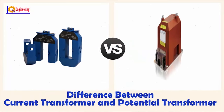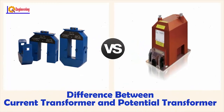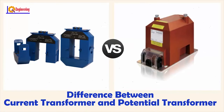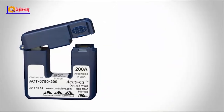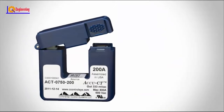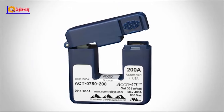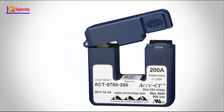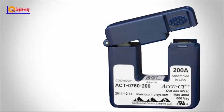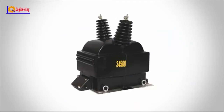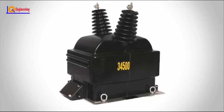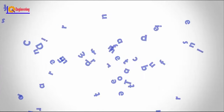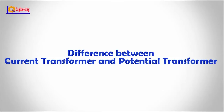Current transformers and potential transformers are devices that allow us to measure large currents and voltages without causing damage to the measuring device. The main difference between a current transformer and a potential transformer is that the current transformer uses a step-up transformer to reduce current through its secondary coils, whereas the potential transformer uses a step-down transformer to reduce the potential difference across its secondary coil. In this video, we will learn the difference between current transformers and potential transformers.